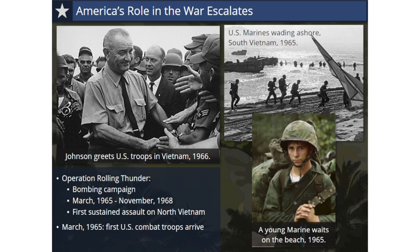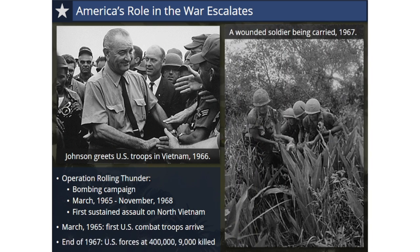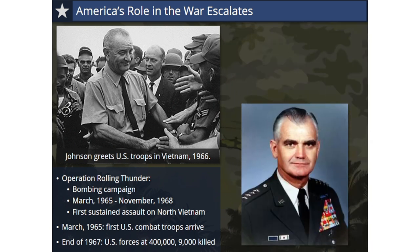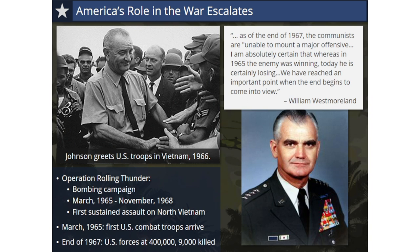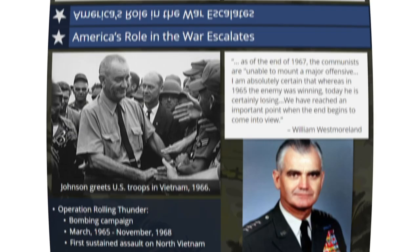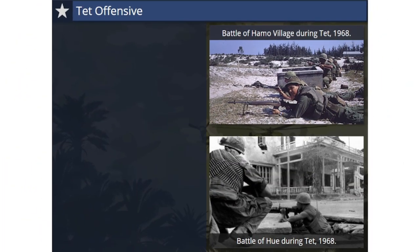Johnson continued to increase troop levels in Vietnam, and by the end of 1967, U.S. forces would number over 400,000. Over 9,000 soldiers were killed in this year. However, William Westmoreland, in charge of the U.S. military forces in Vietnam from 1964 to 1968, reported in November 1967 that the end of the war was beginning to come into view.